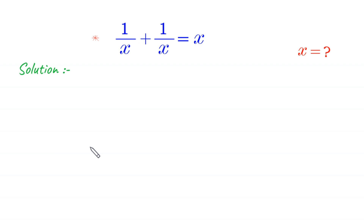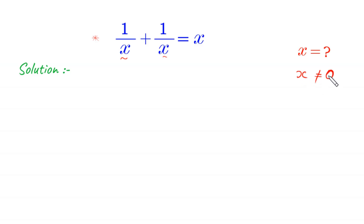Hello everyone, you are welcome. We will solve this very nice algebra equation: 1 over x plus 1 over x is equal to x. Our job is to find all possible values of x. Since x is in the denominator, x cannot be equal to 0. Now we take the LCM of x and x — the LCM is x. x divided by x is 1, so we get 1 times 1 plus x divided by x times 1.